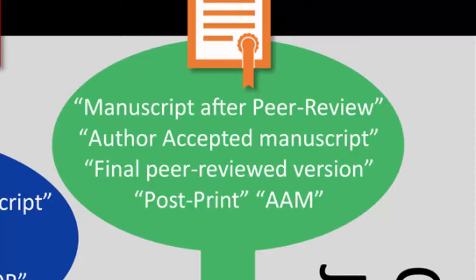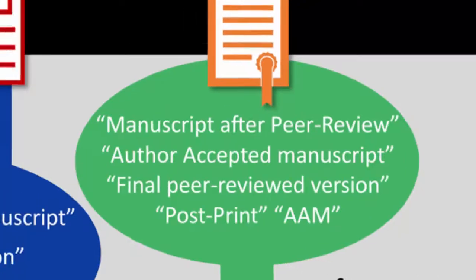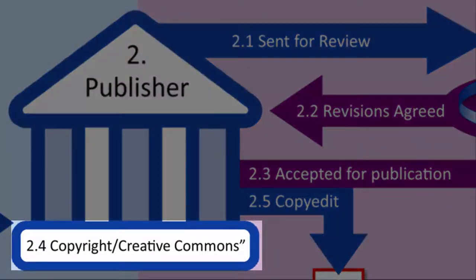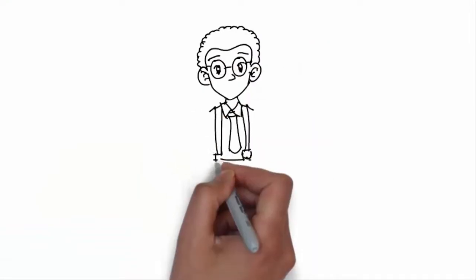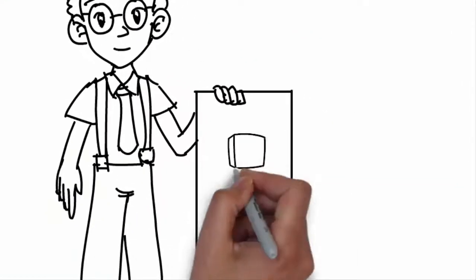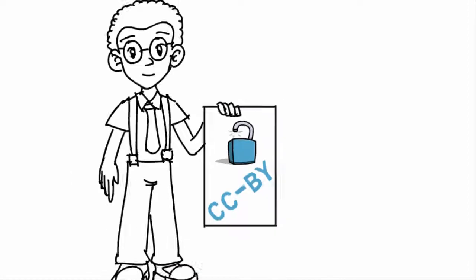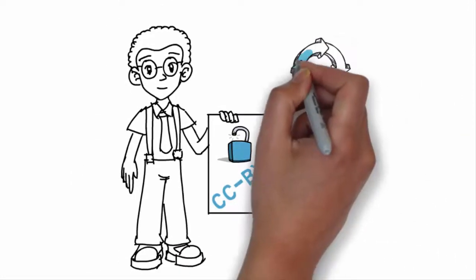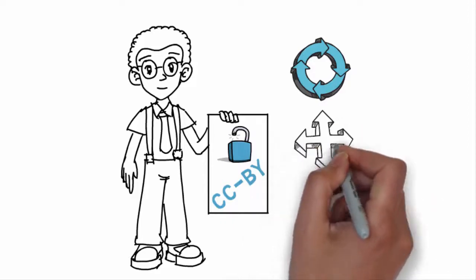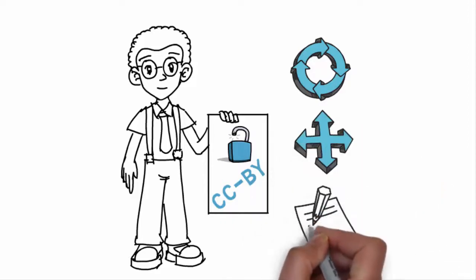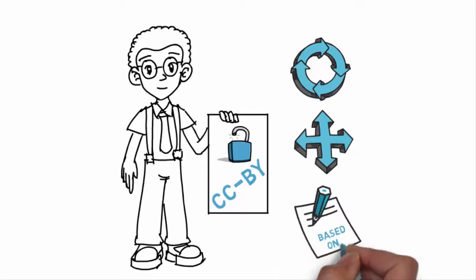This version is also known as the author accepted manuscript, final peer reviewed version, post-print, or AAM — we'll come back to this version later. A copyright license will then be assigned to your paper depending upon the journal and the agreement you have signed. In open access publishing you will retain the copyright and a Creative Commons license will be assigned to your work. The most common is a Creative Commons Attribution license, also known as a CC BY license, under which your research can be reused and adapted freely but full attribution must be given to you as the original author.